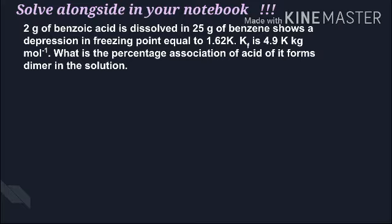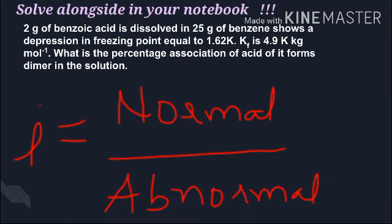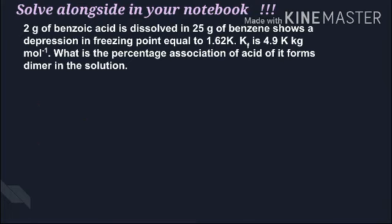There is a difference between actual molar mass (122) and calculated molar mass (241). Obviously there is an association. We calculate i: i = normal molar mass / abnormal molar mass, or theoretical molar mass / experimental molar mass. So 122 divided by 241 gives us i.